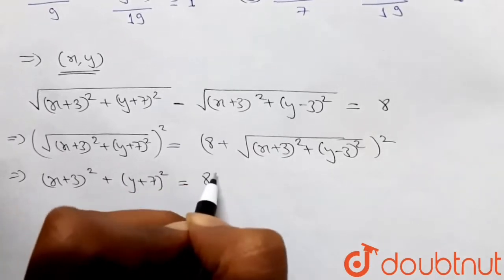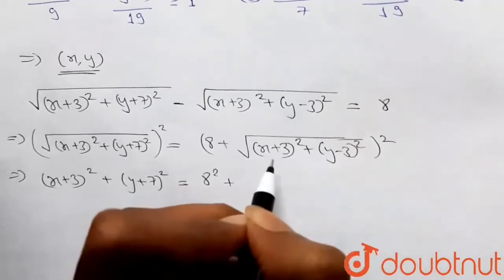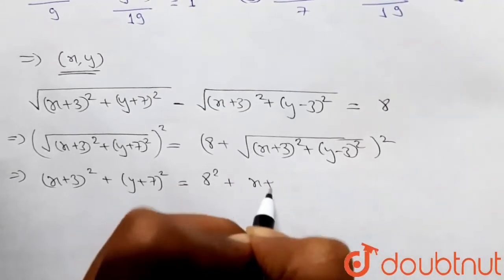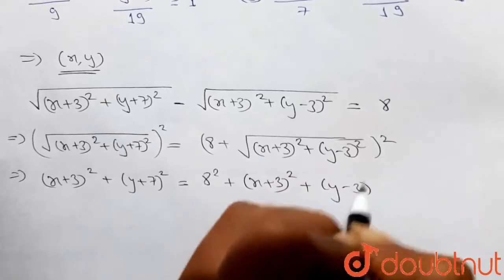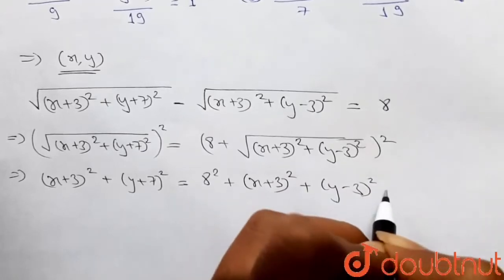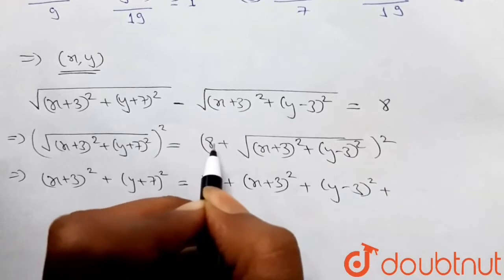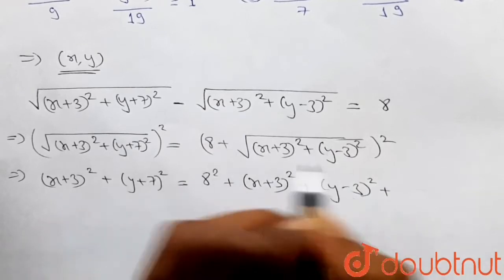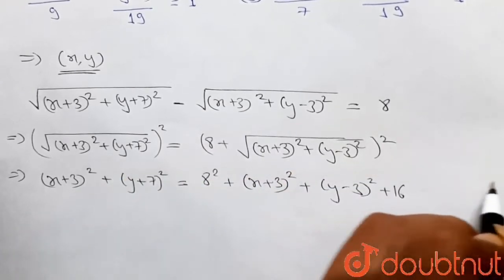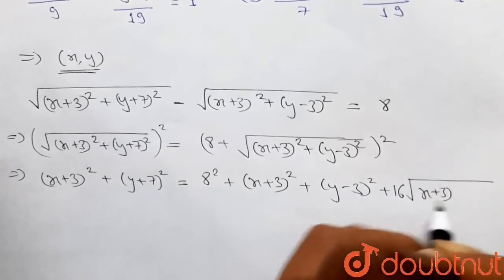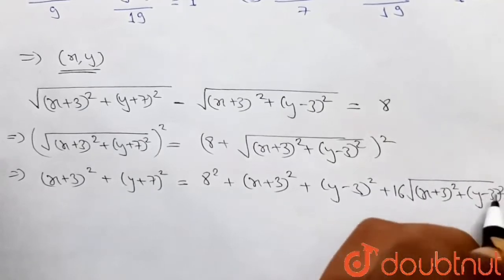On the right side, squaring gives 8² plus (x+3)² + (y-3)² plus 2×8 times √[(x+3)² + (y-3)²], which is 16√[(x+3)² + (y-3)²]. So we have (x+3)² + (y+7)² = 64 + (x+3)² + (y-3)² + 16√[(x+3)² + (y-3)²].